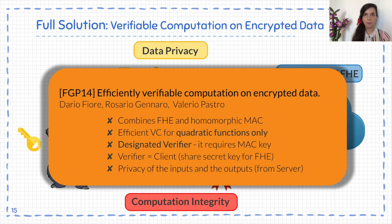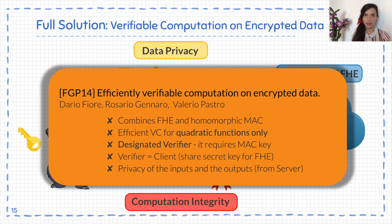This kind of approach was already explored by previous work by Fiore and O, which tries to construct efficient verifiable computation on encrypted data by combining fully homomorphic encryption with verifiable computation. But it achieves efficiency only for quadratic functions when using homomorphic message authentication codes, which is a symmetric primitive. This results in a designated-verifier scheme where the verifier needs a secret key to check the proof, and the verifier and client must share the same secret key for fully homomorphic decryption.